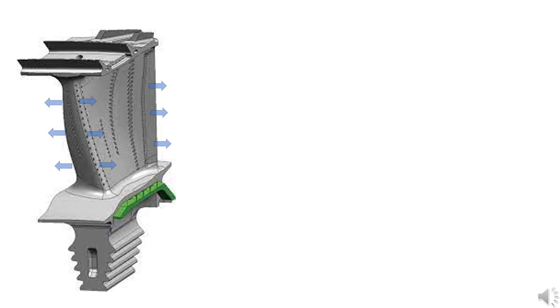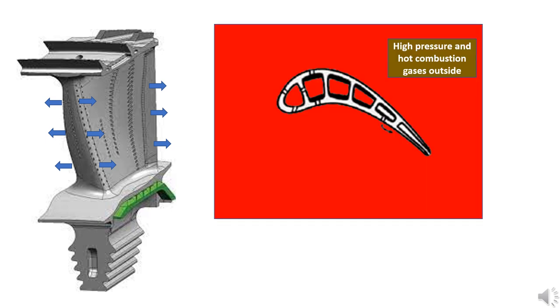After performing the convection cooling and the impingement cooling, the cooler air leaves the turbine blade through the small holes drilled on the sides near the leading edge and the trailing edge. Remember the air outside is not only hot but also at high pressure.